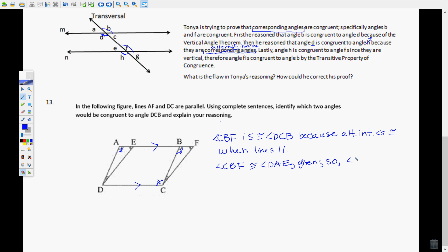So angle DCB is congruent to angle DAE by the transitive property, which says if you remember from algebra, if A equals B and B equals C, then A equals C.